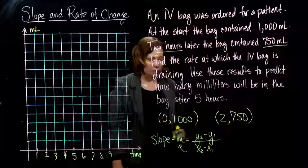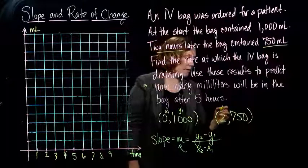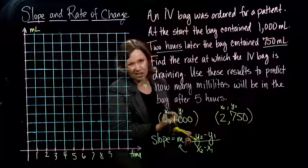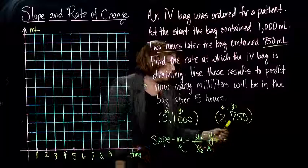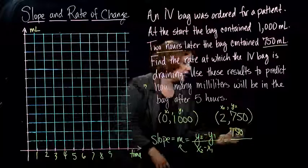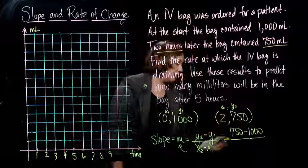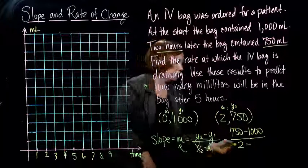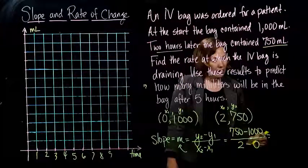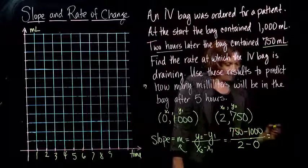And when I'm working with points like this, sometimes I label them to help me. So I'm going to call this first point x1, y1, and the second point x2, y2. The little subscripts just tell you which one's the first one and which one's the second one. So my y2 is 750, and my y1 is 1,000, and my x2 is 2, and my x1 is 0.